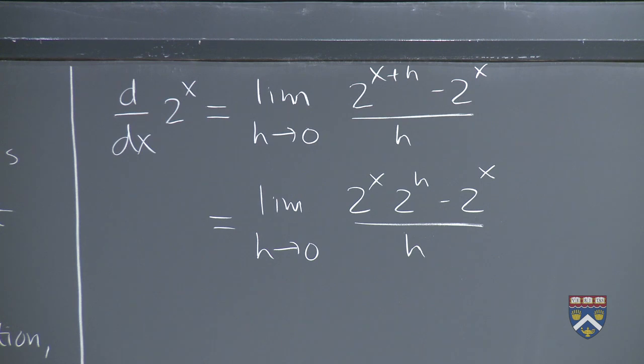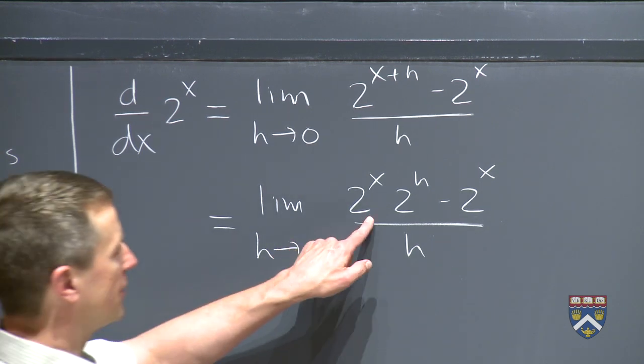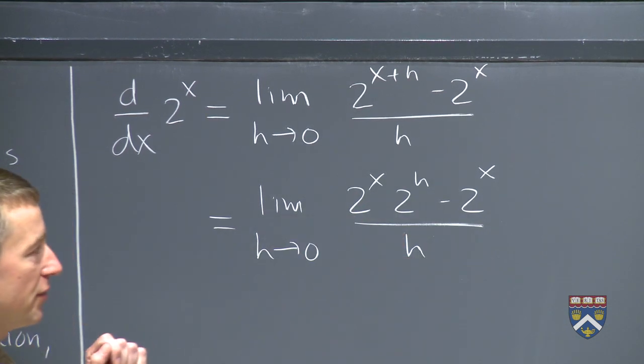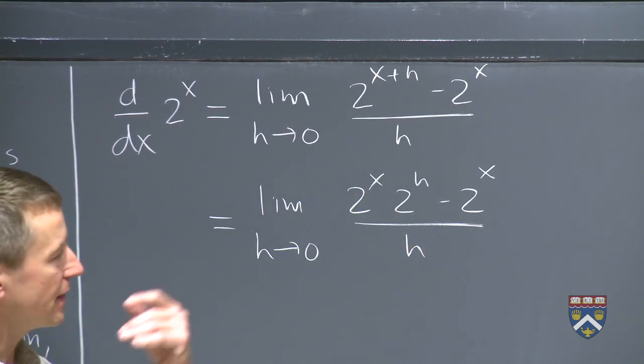Now you should be asking yourself, what could we do next? We see that we have a common factor of 2 to the x on both of these. So we can factor that out.